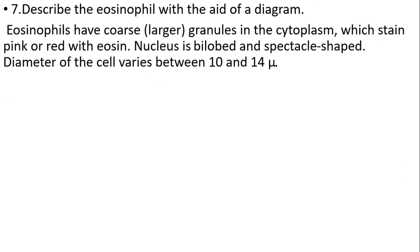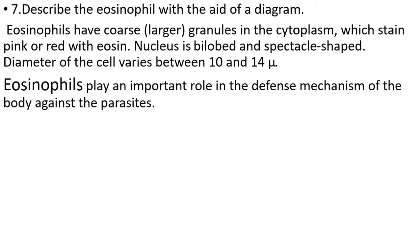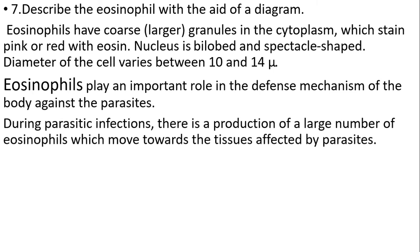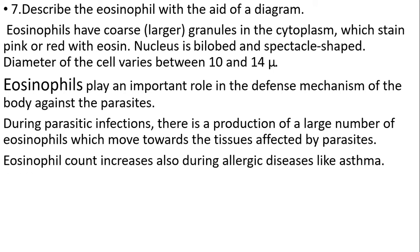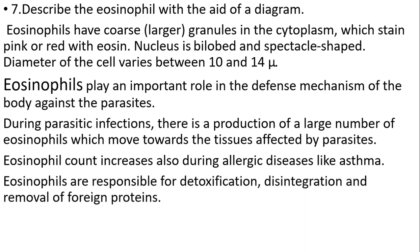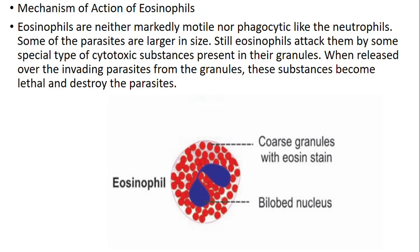Eosinophils have coarse, larger granules in the cytoplasm. They stain pink or red with acid dyes. The nucleus is bilobed and spectacle-shaped; diameter of the cell varies between 10 to 14 micrometers. Eosinophils play an important role in the defense mechanism of the body against parasites. During parasitic infections, large amounts of eosinophils are produced and move toward the tissues affected by the parasite. Eosinophil count also increases during allergic diseases like asthma. Eosinophils are responsible for detoxification, disintegration, and removal of foreign proteins. Mechanism of action: eosinophils are neither motile nor phagocytic like neutrophils. Since some parasites are large in size, eosinophils attack with a special type of cytotoxic substance present in the granules. When released over the invading parasite, this substance becomes lethal and destroys the parasite.